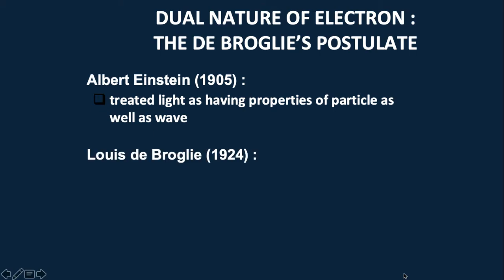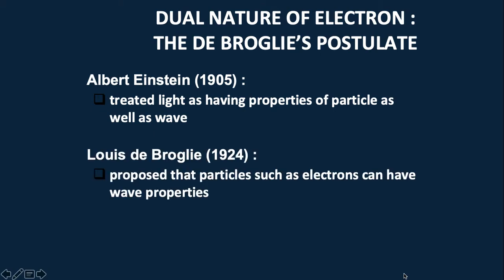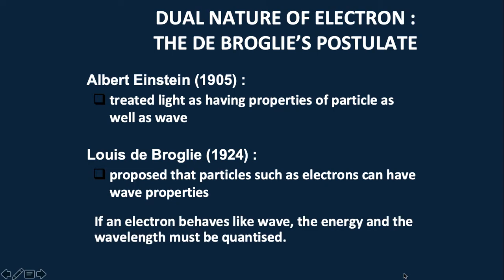Louis de Broglie proposed that particles such as electrons can have wave properties. If an electron behaves like wave, the energy and the wavelength must be quantized or it must have the specific value.